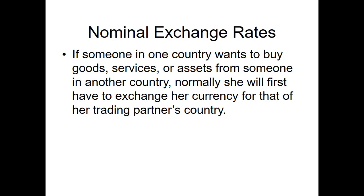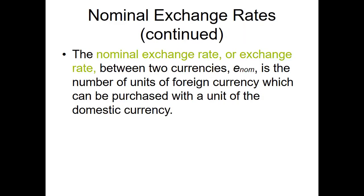Normally, this happens in a foreign currency transaction, wherein the transaction is expressed and denominated in foreign currency and settled in the foreign currency. The nominal exchange rate, or E_NOM, is the number of units of foreign currency (FC) which can be purchased with one unit of the domestic currency (DC). So, for example, if we have one peso, how many dollars can we buy with that one peso? Domestic currency (DC) is also known as local currency (LC).